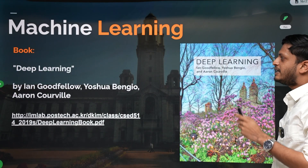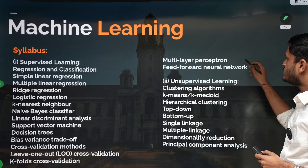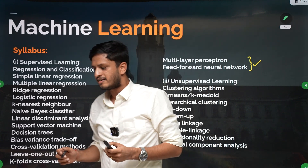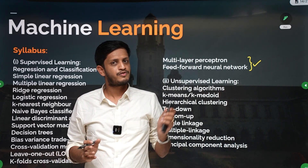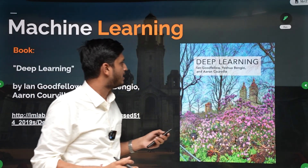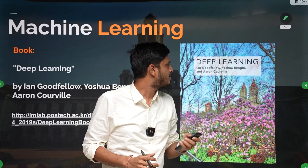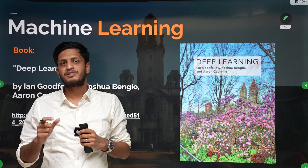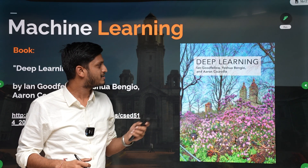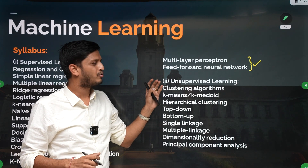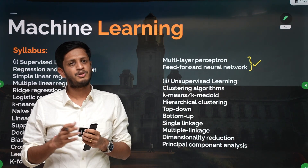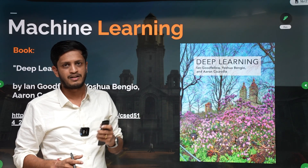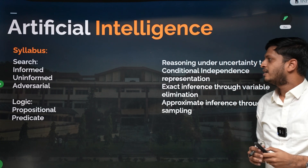The ML syllabus is large and is one of the most important subjects in GATE DA. For deep learning specifically, which covers neural networks, around four to five marks of questions are asked every year. The deep learning textbook we used in our M.Tech for a foundations of ML course is a brilliant resource. However, since only four to five marks come from neural networks, don't read the entire textbook — use it specifically as a reference for deep learning.